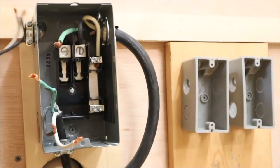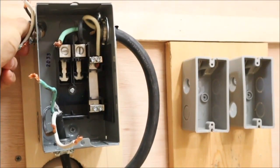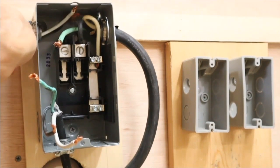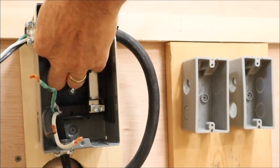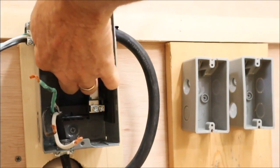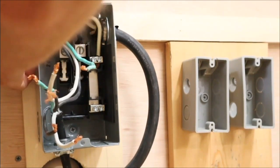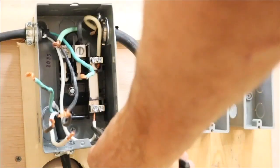Now I can run the 12-gauge wire from each electrical plug-in box to the breaker box. Each one of these wire assemblies has a green wire, a white wire, and a black wire. You'll see I will run the white wire from each circuit to the bottom of that common bar on the right.